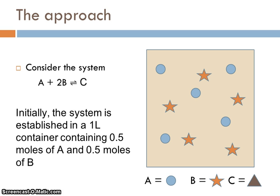So what I'd like to do is show you a setup. Here's the system: A + 2B ⇌ C. This reaction establishes an equilibrium. I'm going to set it up as shown here in this diagram. I've got what's supposed to represent a 1-liter box with half a mole of A, which has a little blue circles, and half a mole of B, which has little stars. I'm setting it up with only reactants and no products.